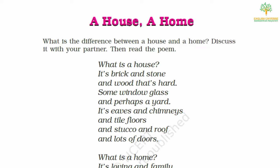A house has many things — it has chimneys, tile floors, and a roof. A chimney is part of the house from which smoke rises. These are the eaves.